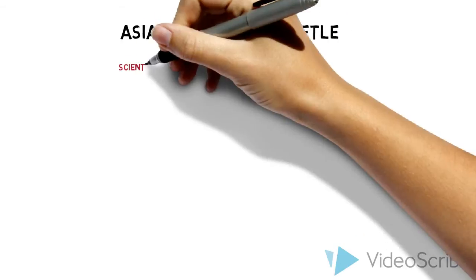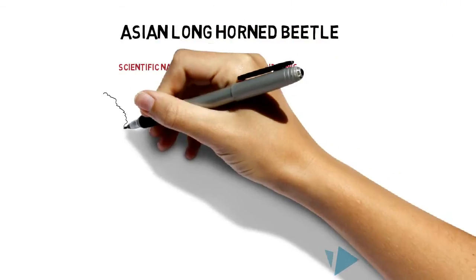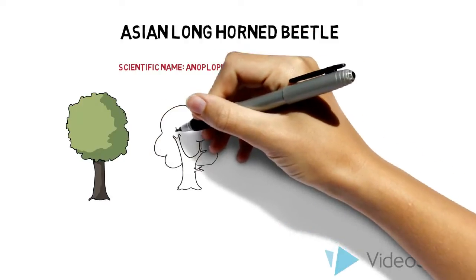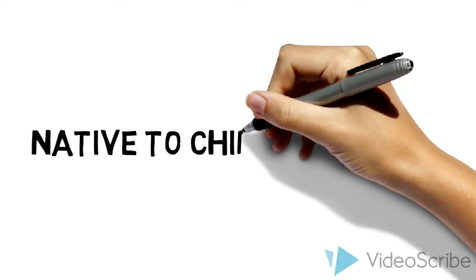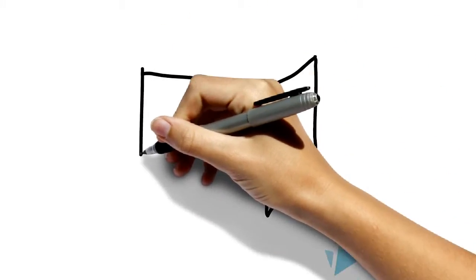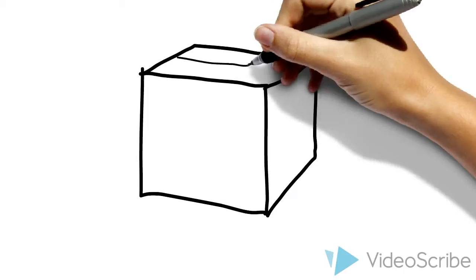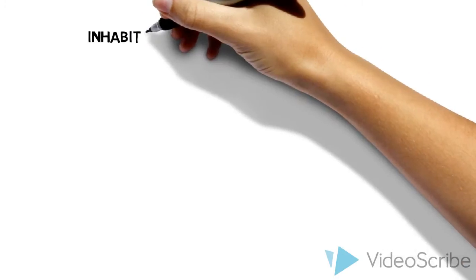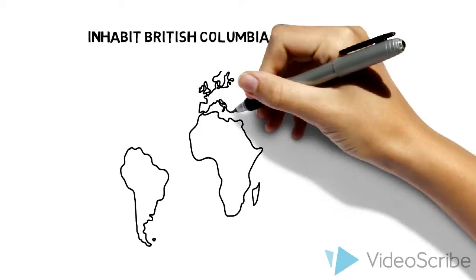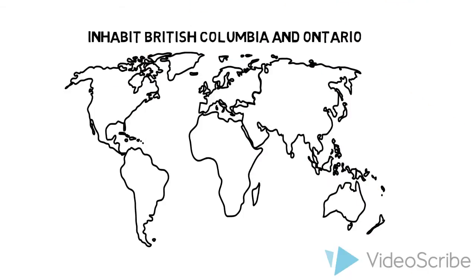A well-known invasive insect is the Asian longhorned beetle. It is a forest pest that attacks nearly all broadleaf trees by feeding on and laying eggs in them. It's native to China and Korea and was introduced in North America through global trade. Untreated wooden shipping pallets were brought to Canada in the early 2000s and led to the spread of the species. Infestation was confirmed in Canada in 2003 and currently the pests inhabit British Columbia and Ontario, with the specific cities being Toronto, Vaughan and Mississauga.